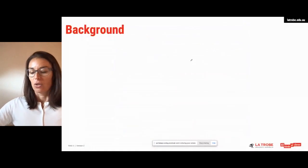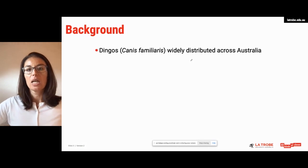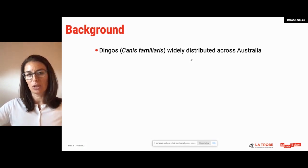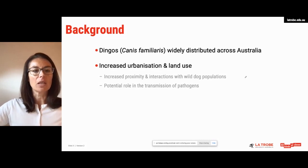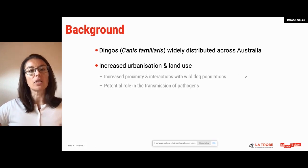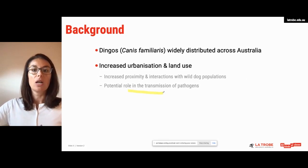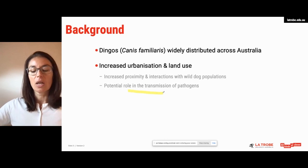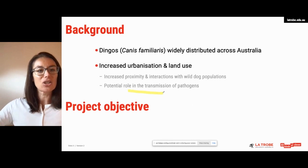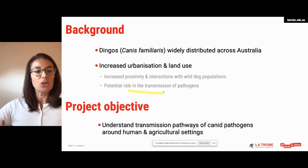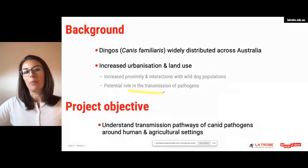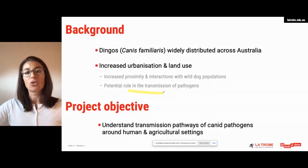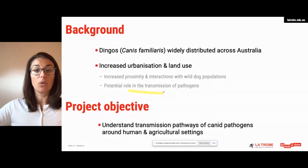Dingoes are really widely distributed across Australia. They are generalist opportunistic carnivores and the country's top order predator. Particularly after post-European settlement, increased urbanization and land use in Australia has really increased the proximity and interactions between wild dog populations and humans. With that comes the potential role for the transmission of pathogens of agricultural significance and possibly of public health relevance. This sets the scene for the overarching role of the project, with the objective of understanding transmission pathways of pathogens of canids around human and agricultural settings.